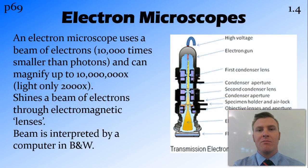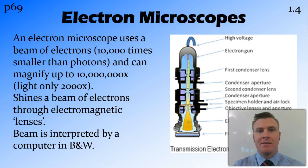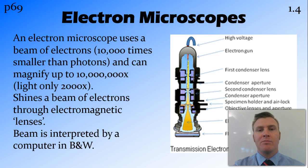An electron microscope works by shining a beam of electrons on or through the specimen. This beam of electrons is focused by electromagnetic lenses and then shone onto a sensor that's connected to a computer, which produces an image in black and white. Sometimes these images are coloured afterwards.